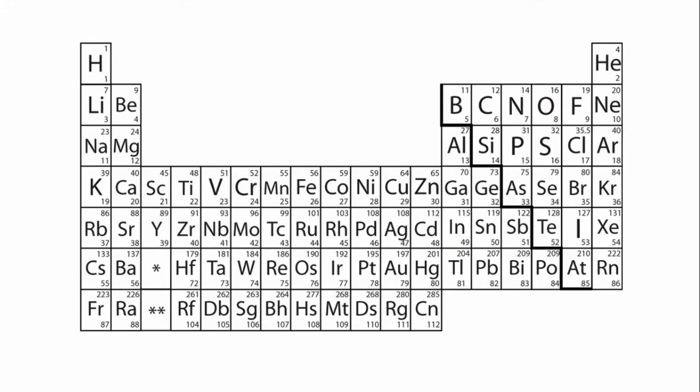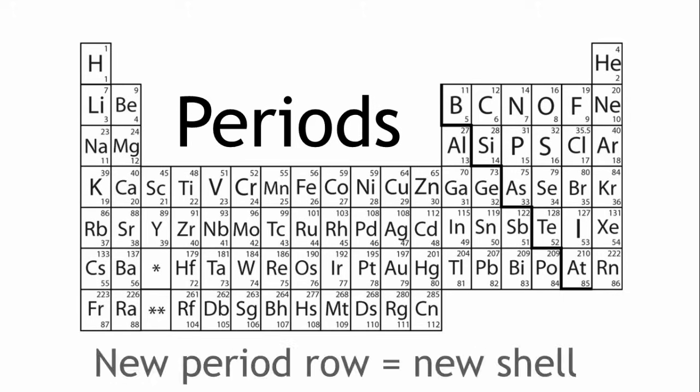The rows going across from left to right are periods. Elements in the same period all share something in common. They have the same number of energy shells. Each new period row represents a new shell.